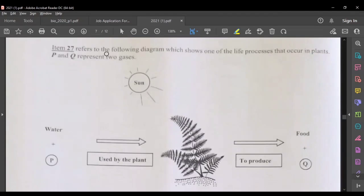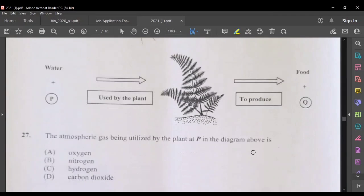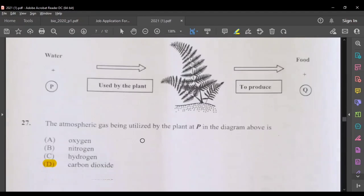Question 27 refers to the following diagram, which shows one of the life processes that occur in plants. We have P and Q here. This looks like photosynthesis, where we have carbon dioxide and water used by the plants and produce food along with oxygen gas. The atmospheric gas being utilized by the plant at P in the diagram above is carbon dioxide.